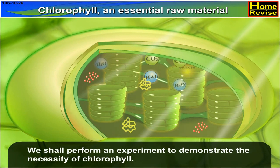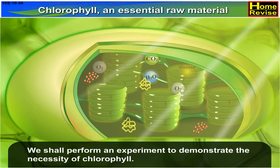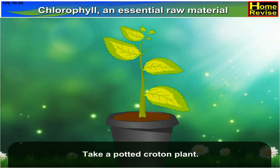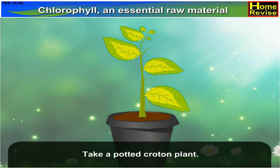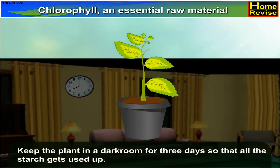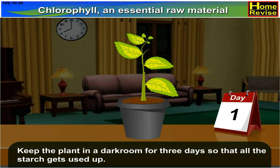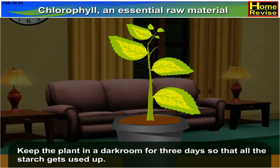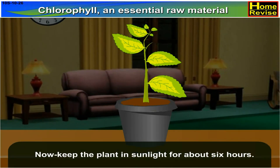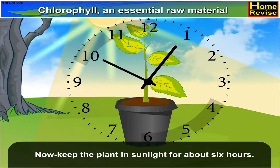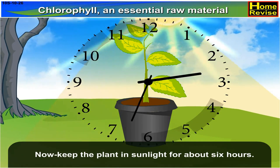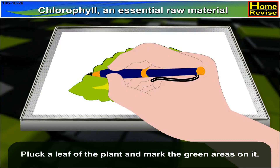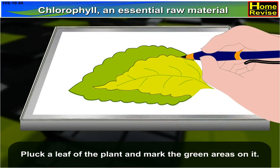We shall perform an experiment to demonstrate the necessity of chlorophyll. Take a potted croton plant. Keep the plant in a dark room for 3 days so that all the starch gets used up. Now, keep the plant in sunlight for about 6 hours. Pluck a leaf of the plant and mark the green areas on it.